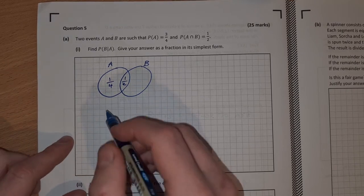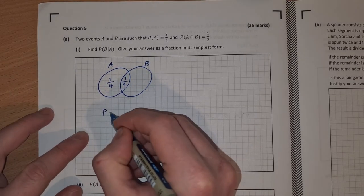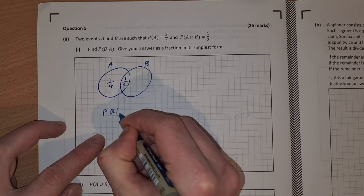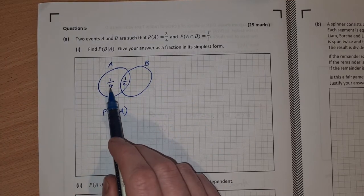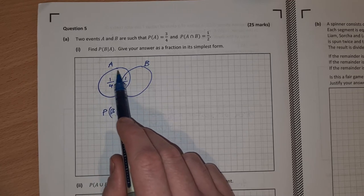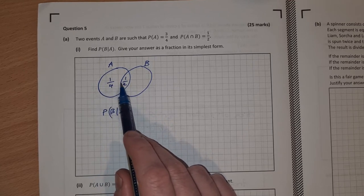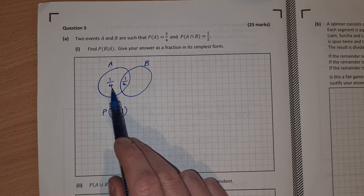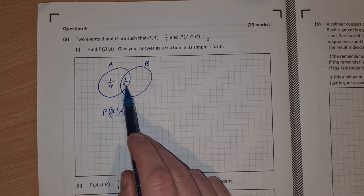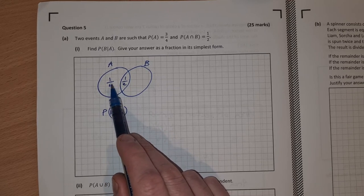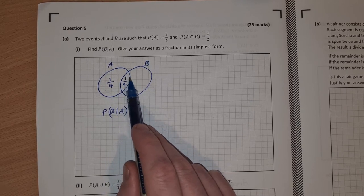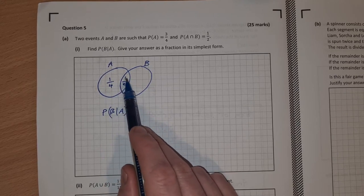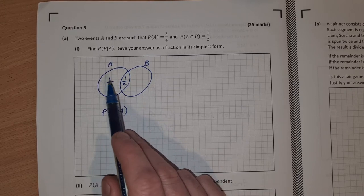So now we want to find the probability of B given A. Well we can read that off our Venn diagram here. If we look at this the probability that A happens is 3 quarters. There's one quarter here and there's a half here or two quarters. So one quarter is there.